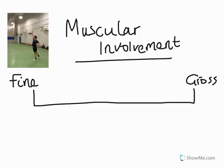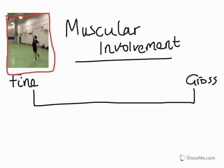Good afternoon and welcome to revision session four. Today we're going to be back on skill acquisition, specifically looking at the topic of classification of skill — a topic which is almost guaranteed to be on your exam paper. Make sure you know the keywords that are highlighted. I'm going to relate everything today to Will Spreadbury, who is playing an overhead drive or clear shot in badminton.